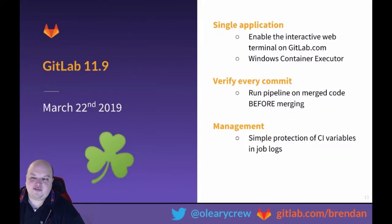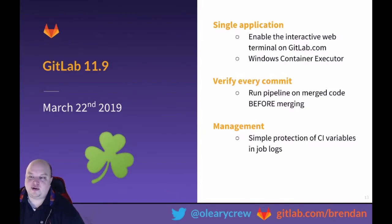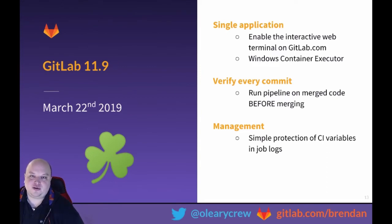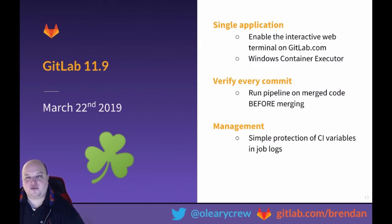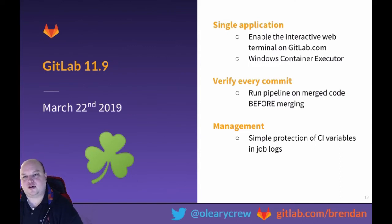Next in March, GitLab 11.9 is going to come with a few great features. One I'm really excited about is enabling our interactive web terminal on GitLab.com. The interactive web terminal was introduced a while ago and allows a user to interact directly in the web application with the terminal in the runner that's running their jobs. This can be really helpful when debugging or trying to understand what's going on with a runner's job. We're working with our infrastructure team to bring this capability to GitLab.com so all users on our SaaS version can take advantage of it.